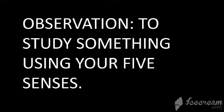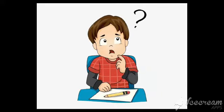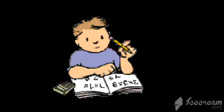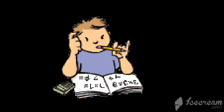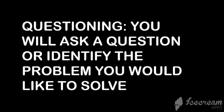Then the second step — you can see there's a boy who is thinking about something, and he is noting down all the problems he was trying to solve. So that is the second step: questioning. This is the step where you are going to collect data from a reliable source. This reliable source can be a book, a journal from a scientist, or from the internet. This is the way you're going to solve or identify a problem.